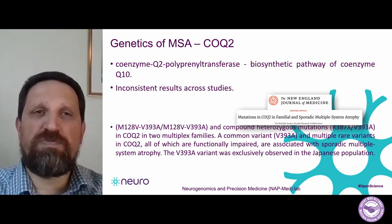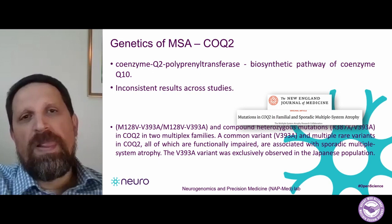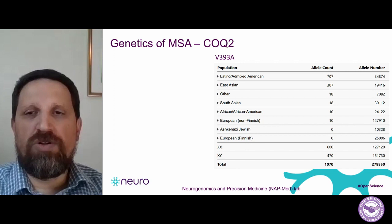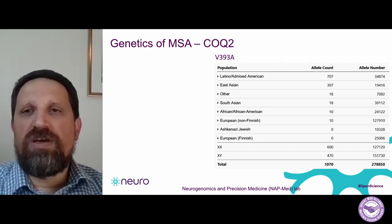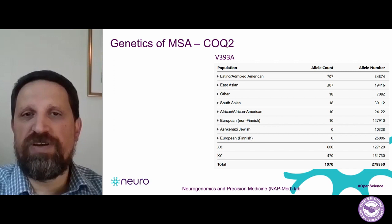This paper was done in the Japanese population, and the authors reported that the V393A variant is unique to the Japanese population. But since then, we have learned this variant can be found in other populations. Data from a website called gnomAD shows that in the Latino population, this specific variant is actually more common than in East Asian populations where the first study was done. It also exists but is quite rare in South Asian, African, and European populations.